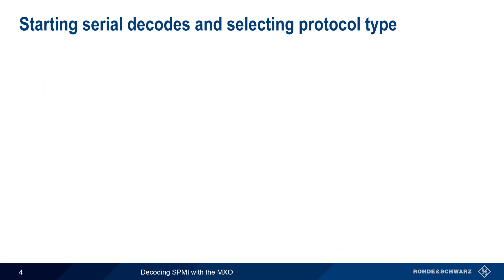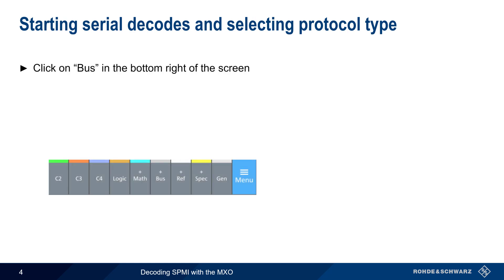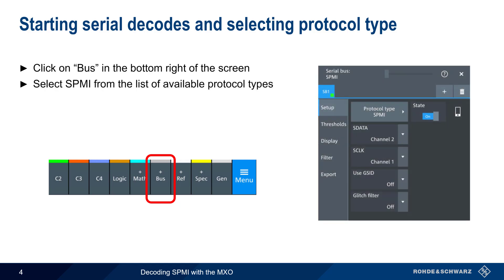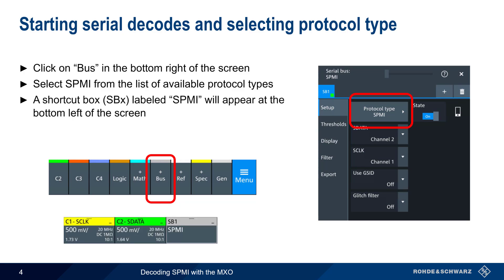The first step in decoding an SPMI bus with the MXO is to select Bus from the list of items in the bottom right corner of the screen, then select SPMI from the list of available protocol types. This will also create a small box labeled SPMI in the signal bar near the bottom left corner of the screen.